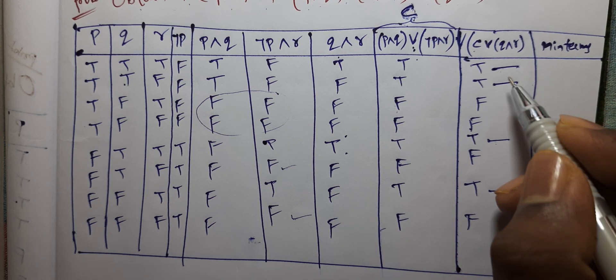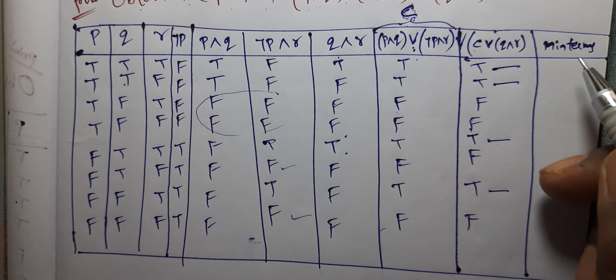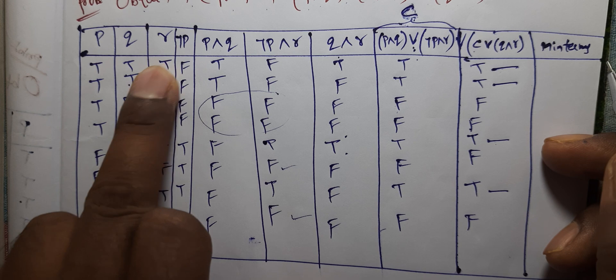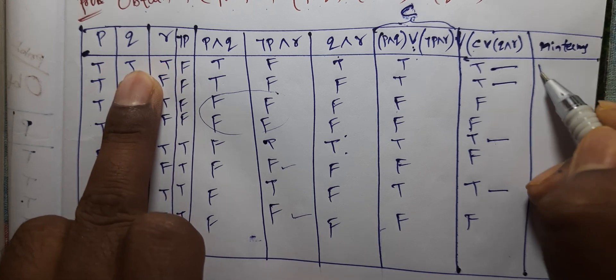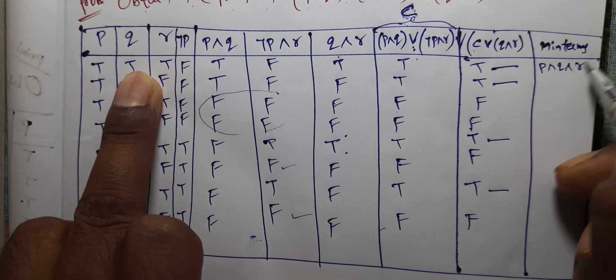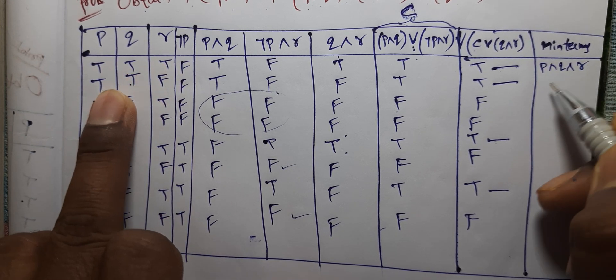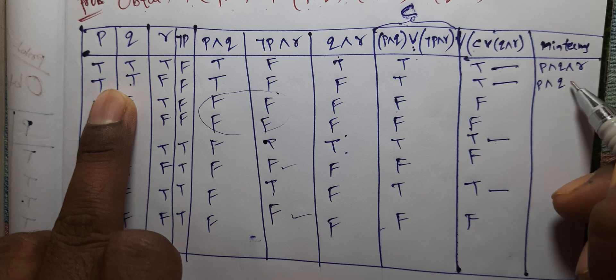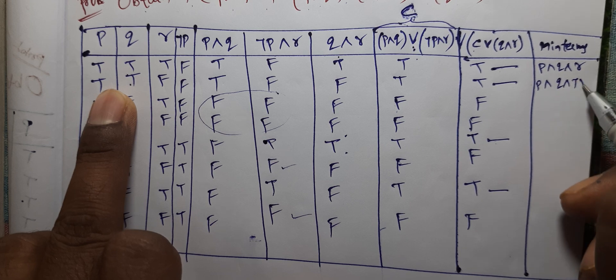Minterms are true. The first minterm is P and Q and R. Next: P and Q and negation R.